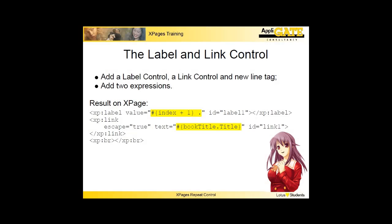Then I added a label control. In the value attribute I reference the variable index. This variable was defined in the repeat control attribute index var, and is actually a counter. The counter starts counting at zero. Next I added a link control, where I used an expression to display the title of the book. I used the variable defined in the repeat control, called Book Title. You can refer to column values by using the column name — in my case, Title.